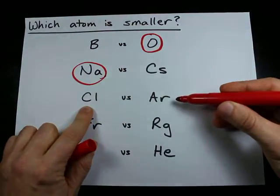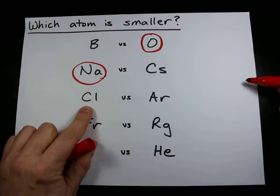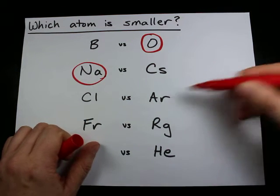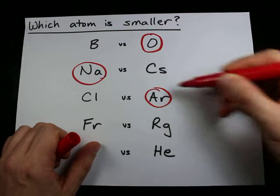Chlorine and argon are both in the third row of the periodic table. And argon is further to the right, so it is smaller.